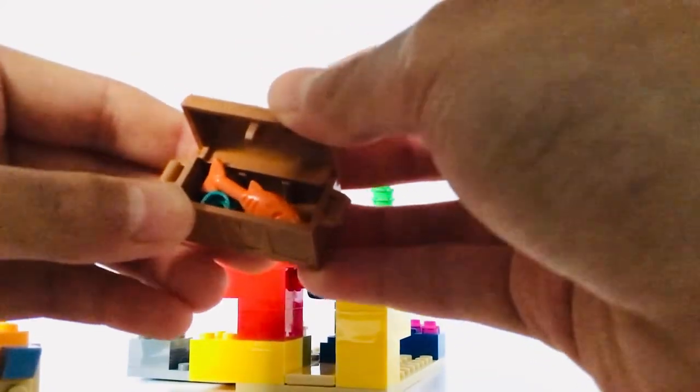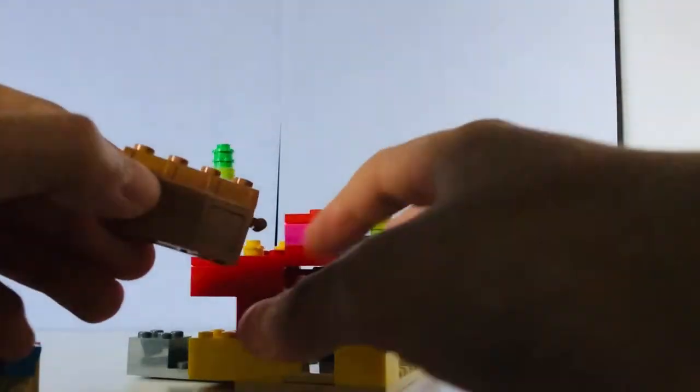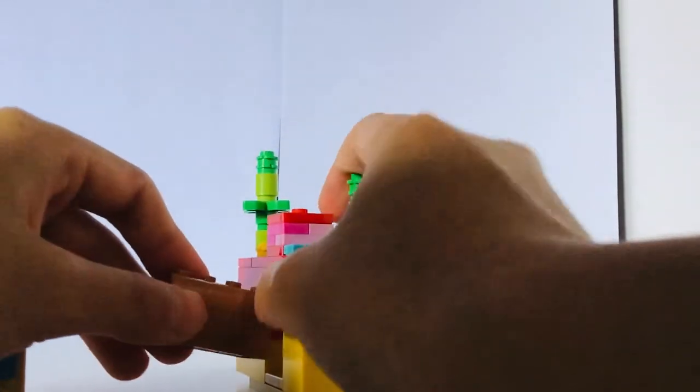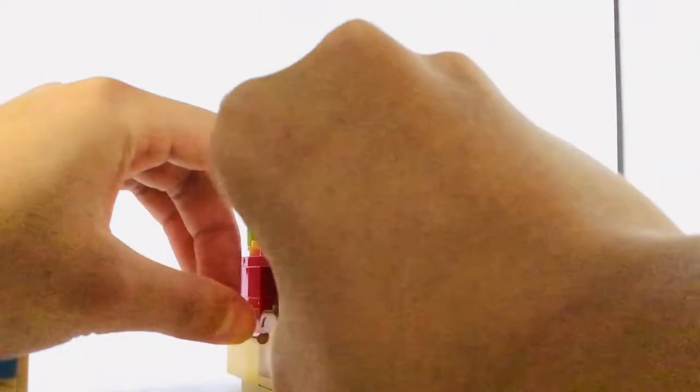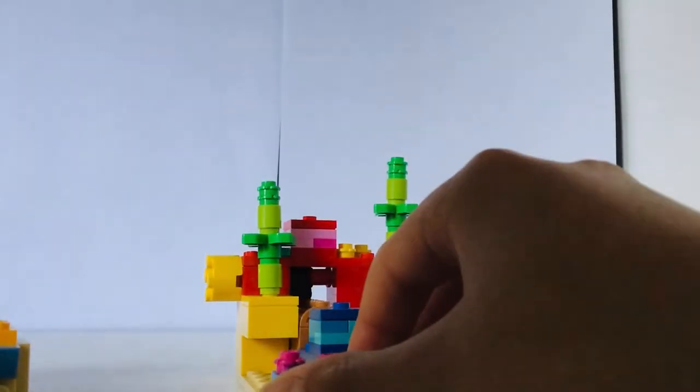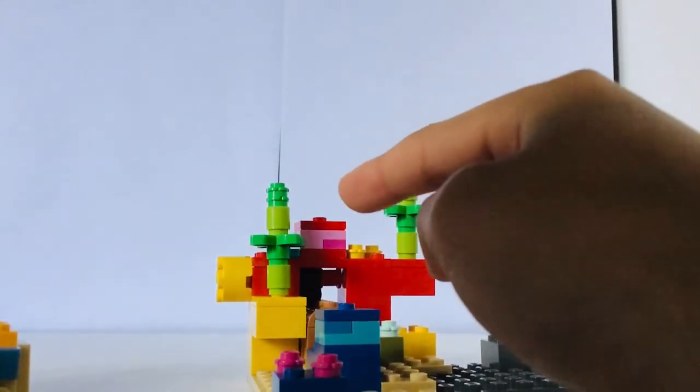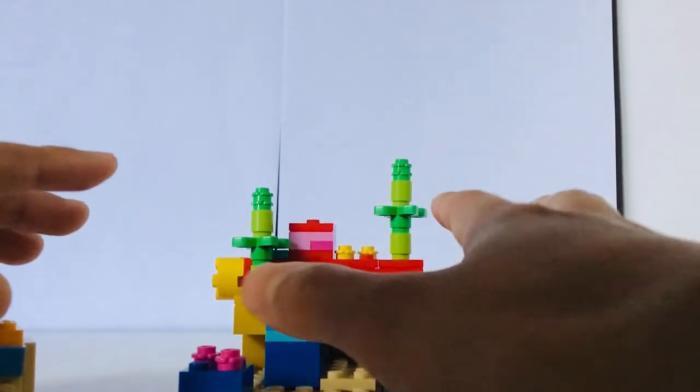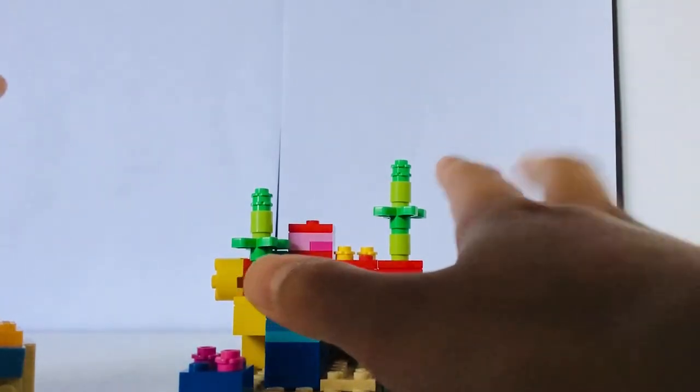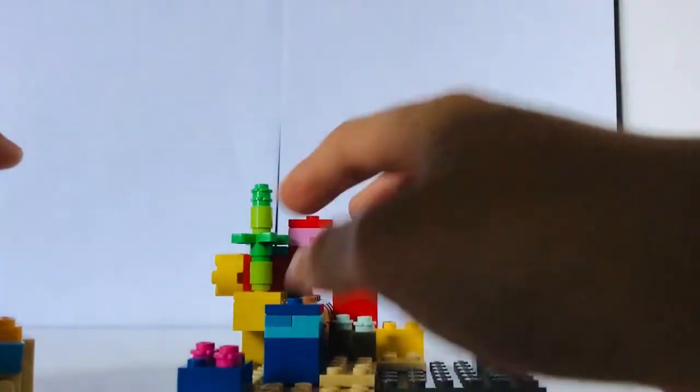In the game of Minecraft, heart of the sea is used to create the conduit. The conduit is, I think, an item that, if you make a ring around it, it causes any nearby mob to die.